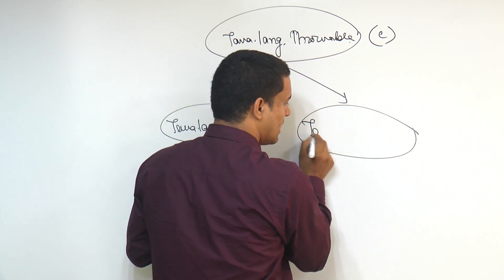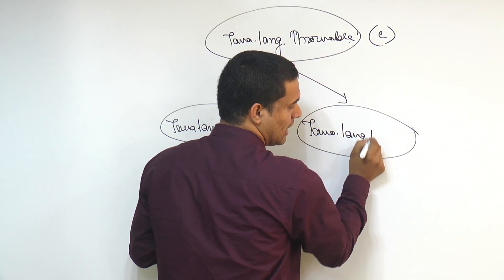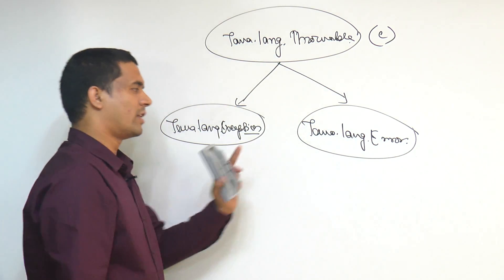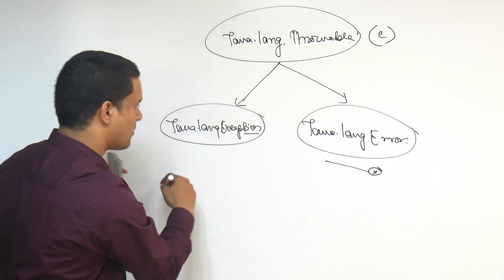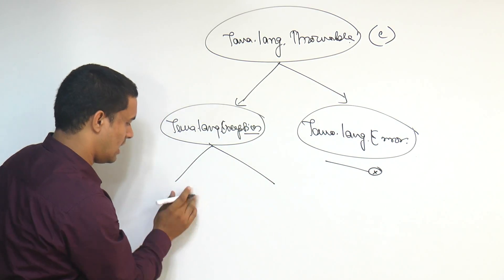And then here again I am writing java.lang.Error, this is one. Something we have seen about the error, so I am not going to this part. I am coming to this one. When I am coming to this, in that also two options which we are getting.